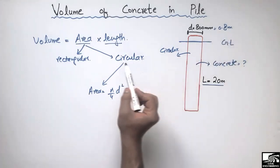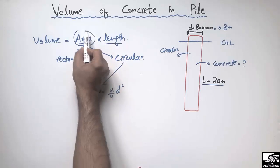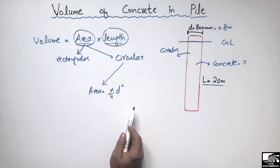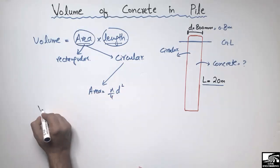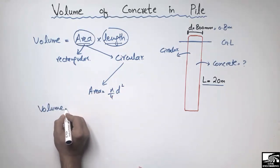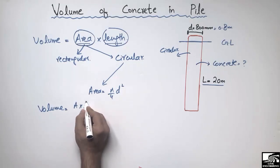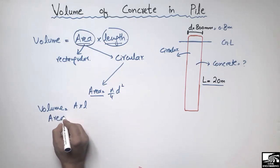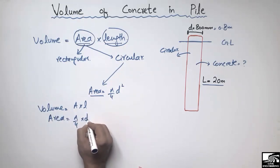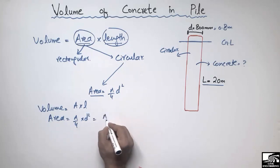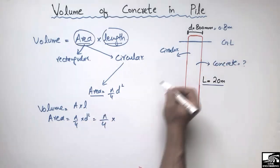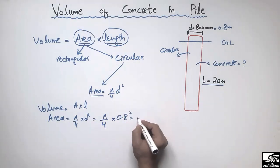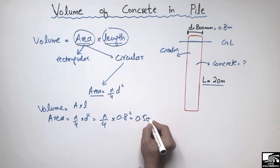The diameter is 0.8 meters. By plugging all these values into the area formula, we can find the volume of concrete in this single pile. The area is calculated as π/4 × d² = π/4 × (0.8)², which comes out to be 0.50 square meters.